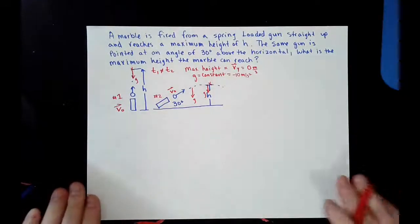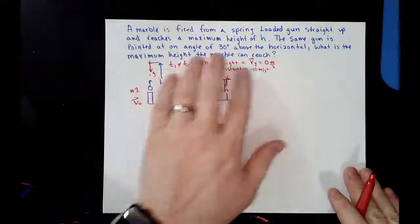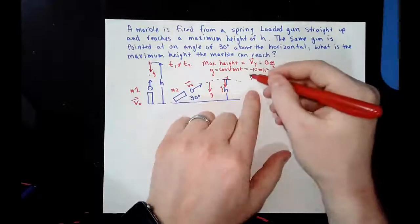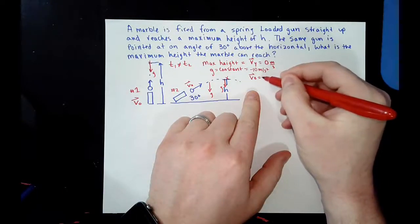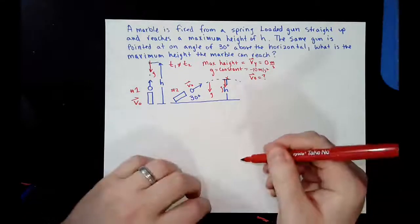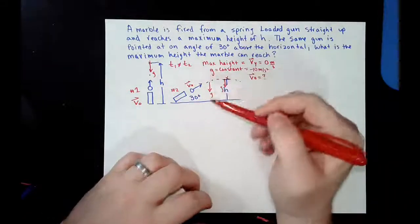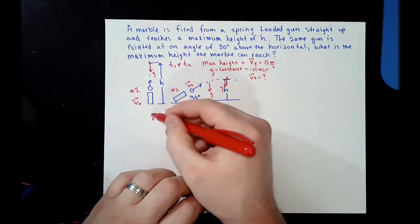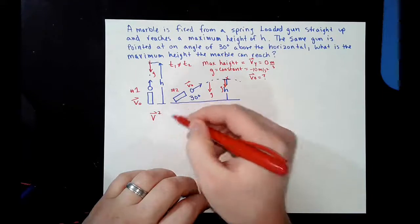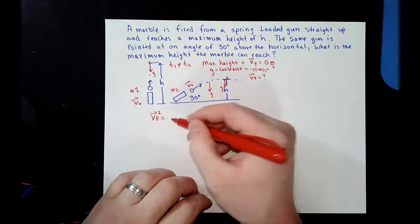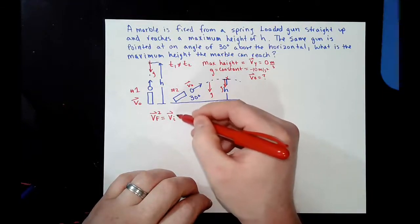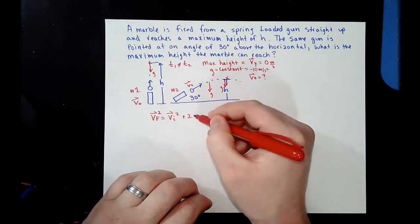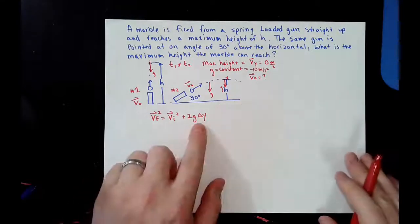Now, if you understand that we have these variables and we are looking for our velocity initial, we can then use some kinematics. Like I said, we don't know time, and the only kinematic equation that doesn't have time in it is velocity final squared equals velocity initial squared plus 2g delta y.